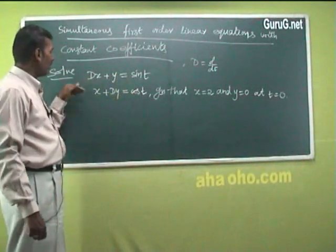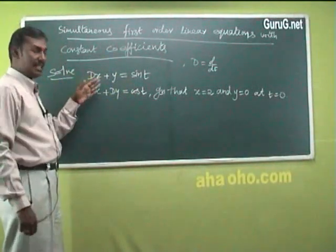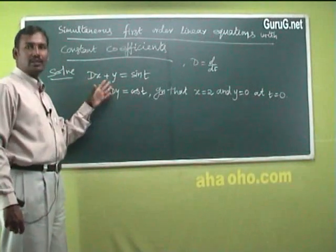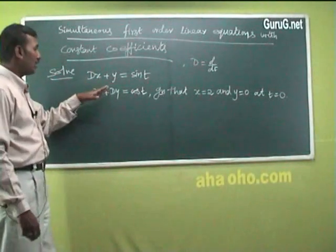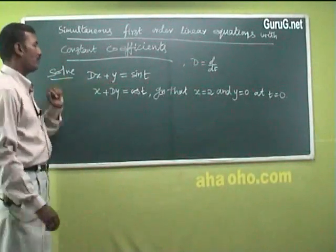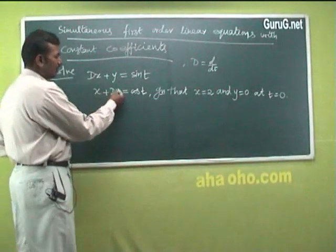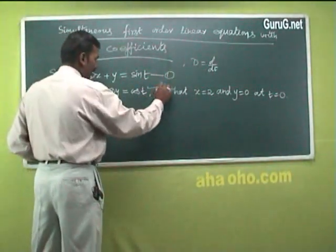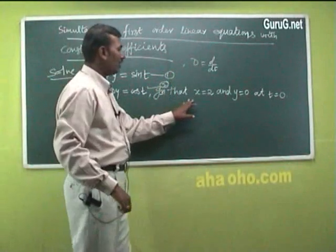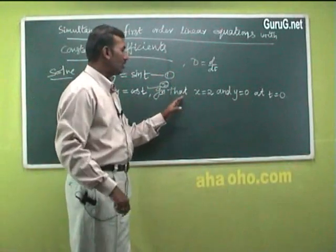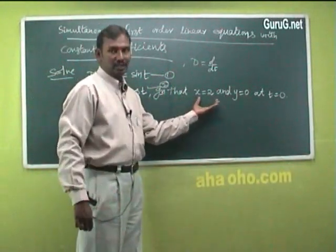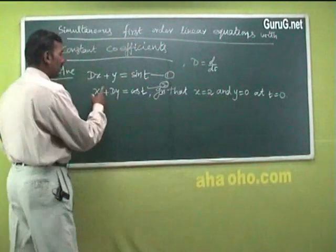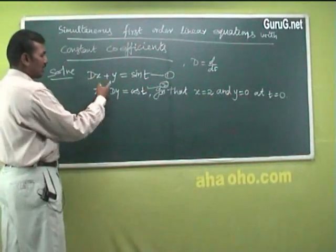How can you solve this? You have to find out the value of x and y. First, you have to eliminate either y or x. These are equation 1 and equation 2. The given condition is used to find the value of the arbitrary constants. Take equation 1 and equation 2.